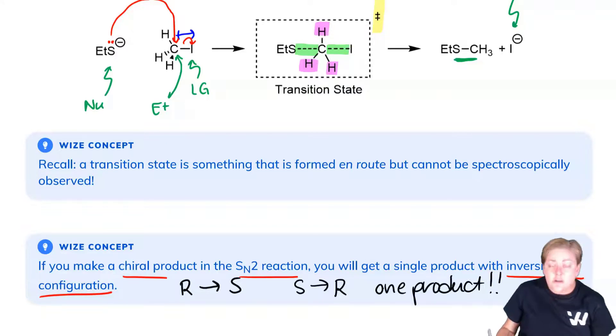And if we contrast this to the SN1 reaction, we got a racemic mixture of two products if the products were chiral. So now we're starting to see the importance of how we can separate the two.